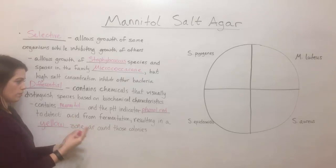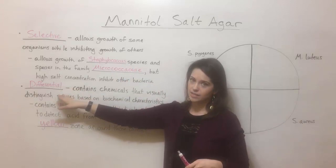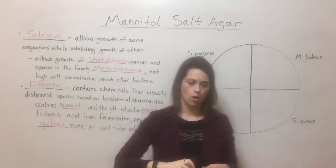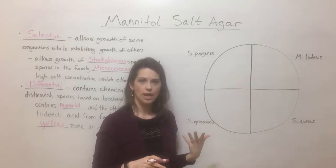So to summarize: mannitol salt agar is selective, allowing only Staphylococcus and Micrococcaceae bacteria to grow, and it is differential — if you see a yellow zone, it means that bacteria can ferment mannitol. Now let's take a look at how this works in practice. Here I've drawn an agar plate with four quadrants, and we're going to see what four different kinds of bacteria would look like on a mannitol salt agar plate.